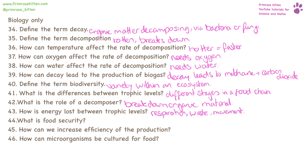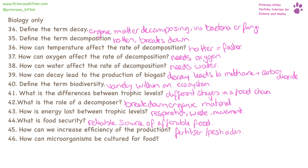Food security is having a reliable source of affordable food. We can increase the efficiency of food production by using fertilizers and pesticides. Microorganisms can be cultured with food — for example, mycoprotein is a large protein which we can eat.